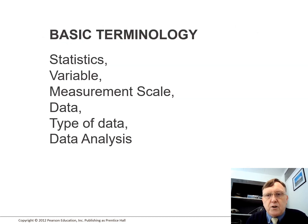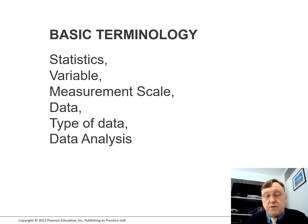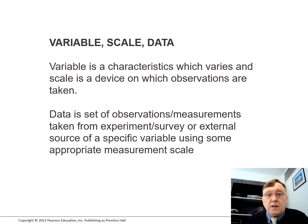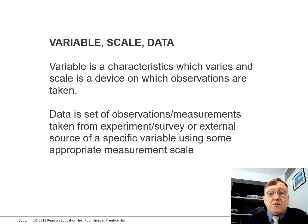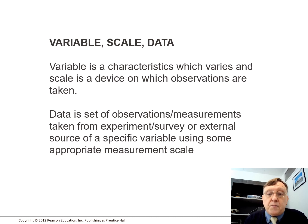So some basic terminology we'll be looking at: statistics, variable, measurement, scale, data, types of data and data analysis. Variable is a characteristic which varies, and scale is a device on which observations are taken. Data is a set of observations or measurements taken from an experiment, survey or external sources of a specific variable using some appropriate measuring scale.